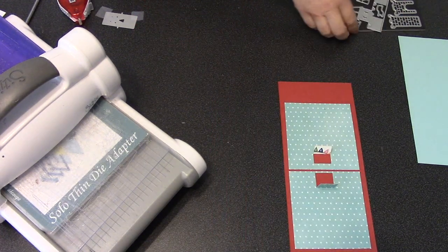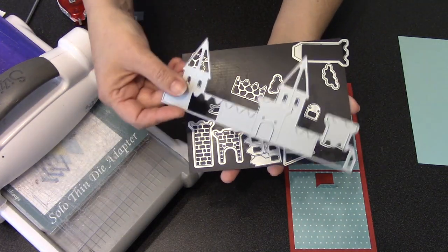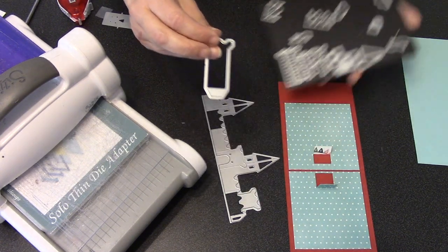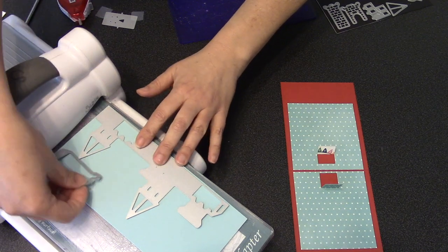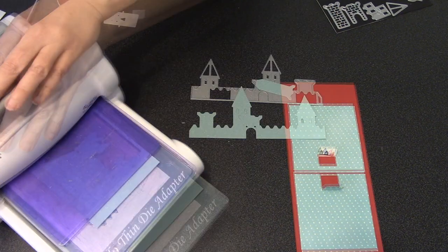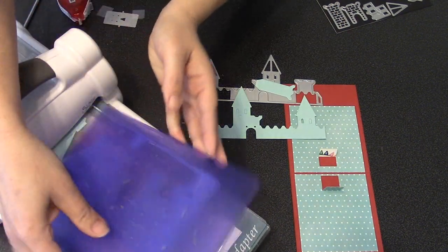I'll set that aside and work on the castle now. I'll need the big castle die as well as the tower, the open tower that has that tab attached to the bottom. So I'll arrange my castle die and my tower on my cardstock so I can cut those at the same time, and then I'll run back through with just the tower piece because I need two of those.